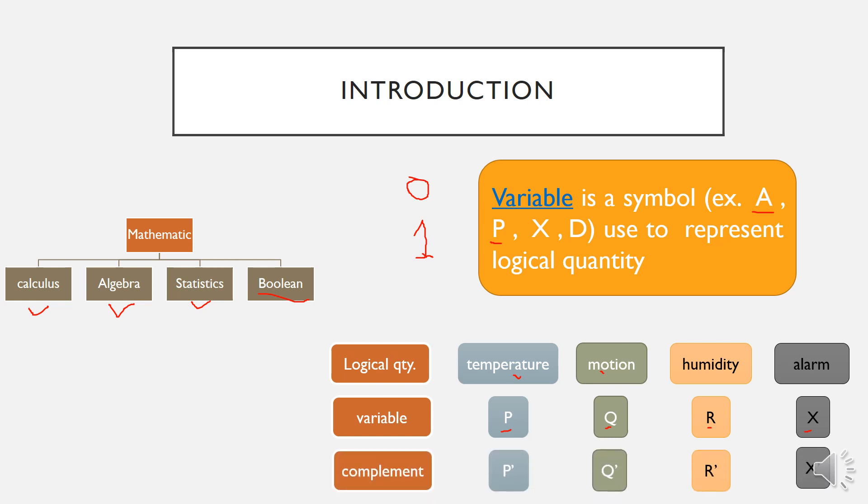Another term or definition that I would like you to remember when dealing with Boolean algebra is a term which is called complement. Basically, complement is the inverse of the variable. Previously we learned about NOT gates, so it is the same thing. We can use a bar on top of the symbol to represent the complement.